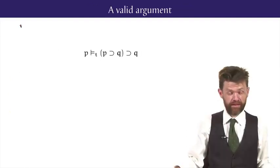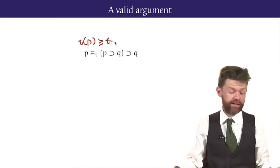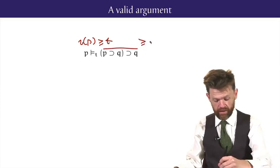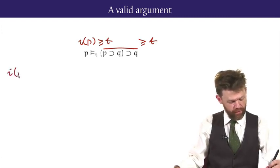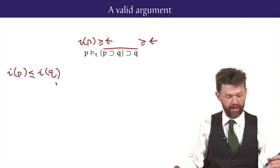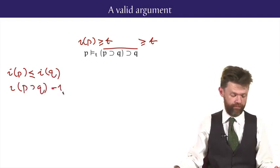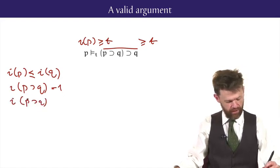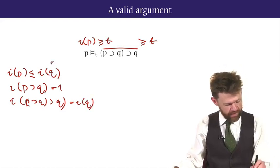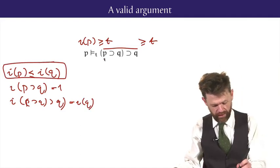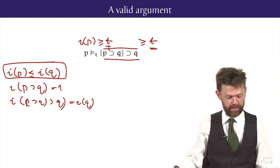Here's an example of an argument which is going to turn out to be valid. To show that it's valid, we'll suppose that the value of the premise is above the threshold T, and we want to show that the conclusion is also above that threshold value. And in getting to this conclusion, we'll look at two different cases. If the value of P is under or equal to the value of Q, then Lukasiewicz's rule for the conditional says that P implies Q gets the value 1. And in that case, P implies Q implies Q, gets exactly whatever value Q gets. So, because the value of P is less than or equal to the value of Q, the value of the conclusion of the argument is indeed greater than or equal to T, because the value of P is greater than or equal to T. So that's the first case done.